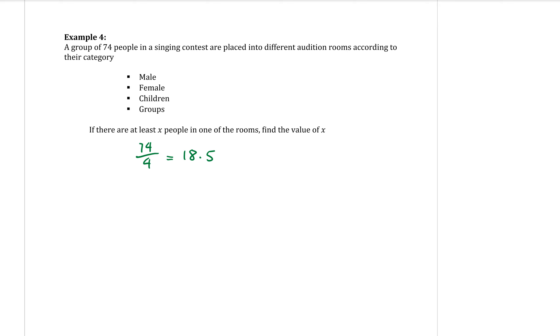That means that at least one of those rooms would have to have 19. But we're just saying at least one of them has to have 19. So, therefore, there will be at least 19 in one of the rooms. And I probably should say that means that X is equal to 19. That's it. That's the pigeonhole principle.